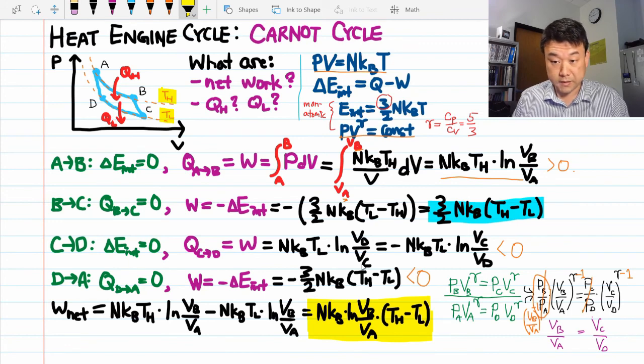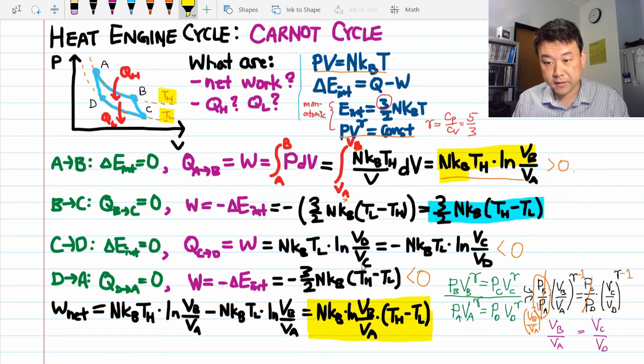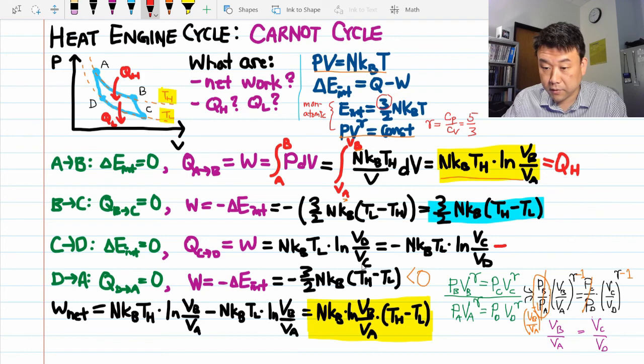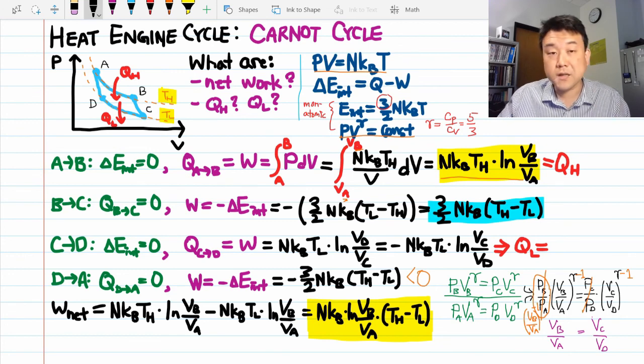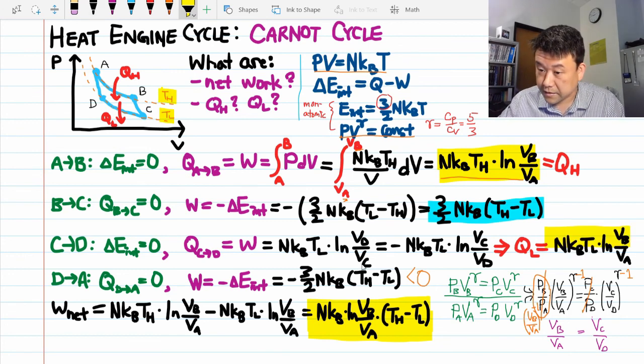The heat input is here. It's this one heat input that we already calculated. This is our QH. And QL comes directly from the quantity we calculated for the process C to D. Let me just make the quantity positive and make the substitution we just discovered. That's it. We are done.